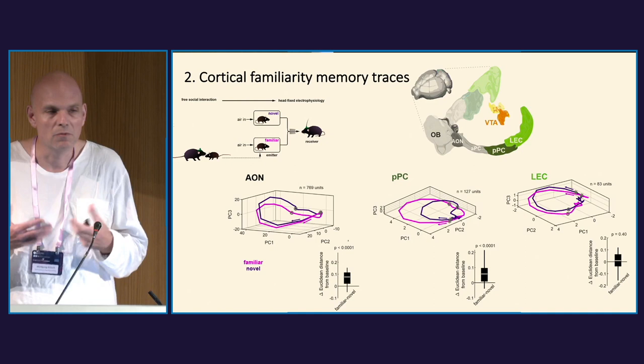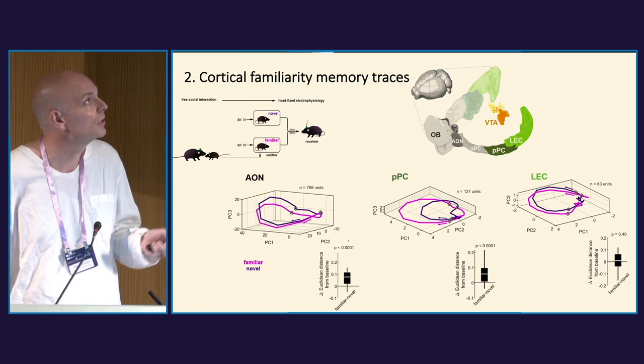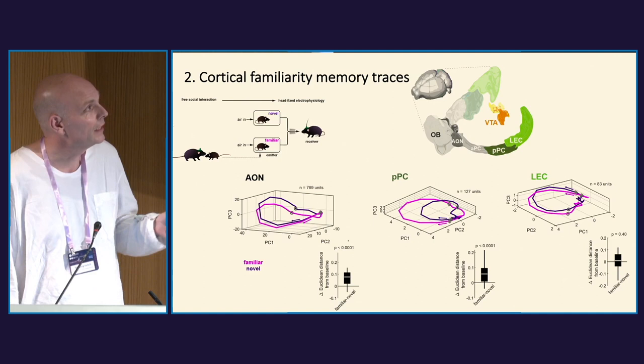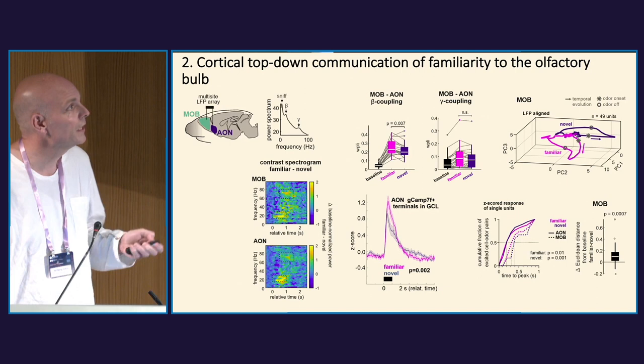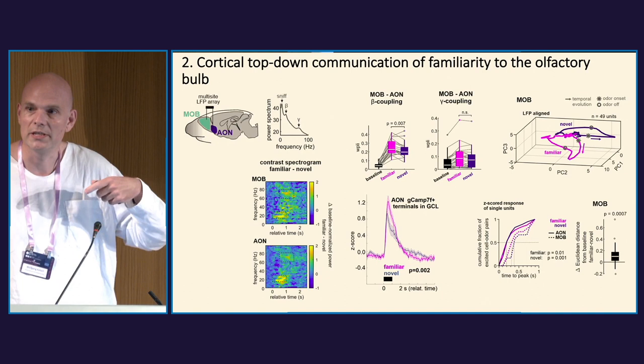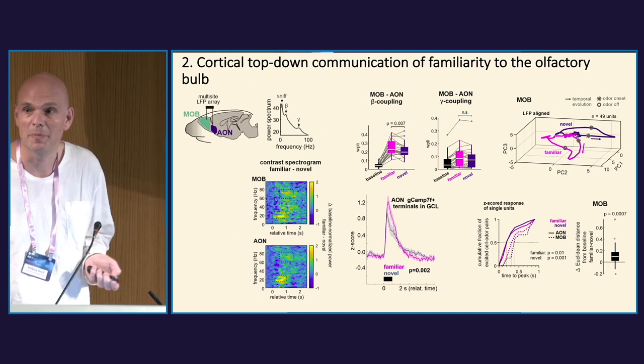Interestingly, this stronger familiar response did not appear in the lateral entorhinal, which may not be surprising since the lateral entorhinal is thought to handle more environmental associations — which should not play a role in this task. In the VTA and also in the olfactory bulb we also see stronger differentiation, and we see that this familiarity information is channeled top-down from the anterior olfactory nucleus to the olfactory bulb, for instance with fiber photometry and also when looking at the LFP.